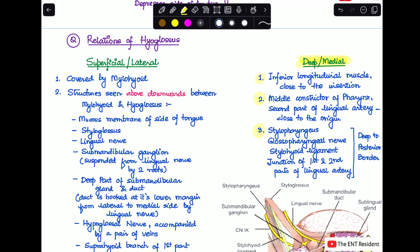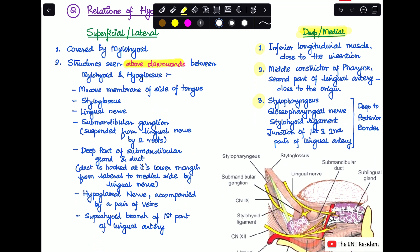Next we talk about the superficial or the lateral relations. This is what you will be depicting in the diagram. First of all, I've already mentioned how the hyoglossus is covered by the myelohyoid muscle. So if you remove the myelohyoid muscle, you will see certain structures which go from above downwards between these two muscles. You have to remember the direction: it's from above downwards between these two muscles.